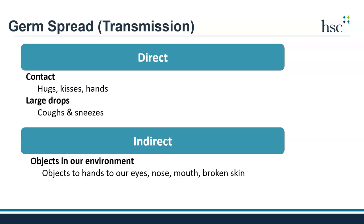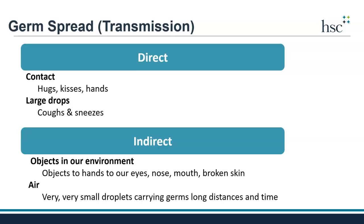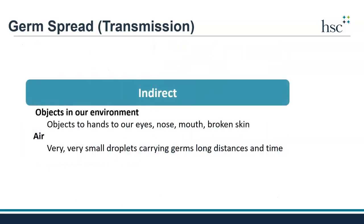Some germs also spread indirectly through the air in very, very small droplets that can come from people when they talk, sneeze, or cough, or even spread through using certain medical devices like ventilators. When germs spread to us, we can get an infection and get sick. In this lesson, we will focus on indirect spread from objects and surfaces and what can be done to protect the nursing home environment. Please see the iCare resources provided in this lesson to learn more about direct germ spread and how to prevent it.